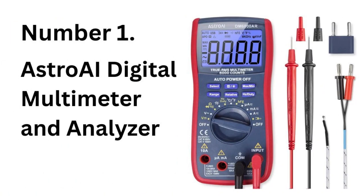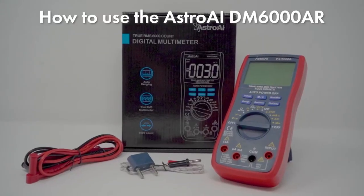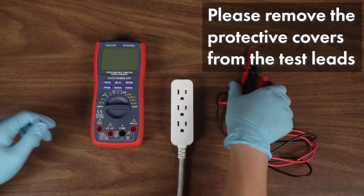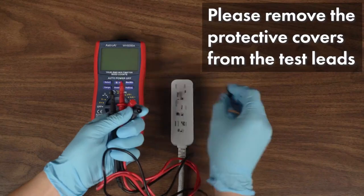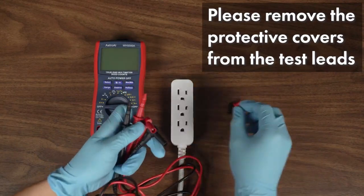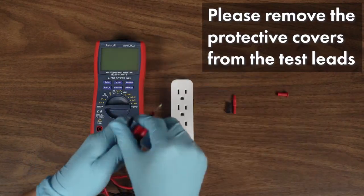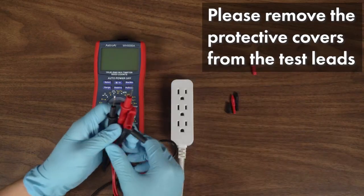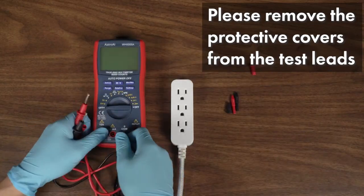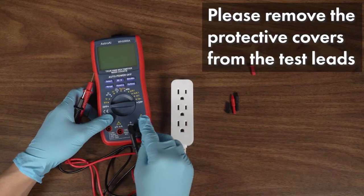Number 1. Astro AI Digital Multimeter and Analyzer. The Astro AI 6000 is a top pick for electronic hobbyists, offering excellent AC-DC measurement capabilities, along with advanced features like testing transistors, diodes, resistors, capacitors, and even temperature via a thermocouple.